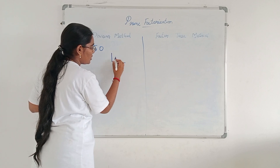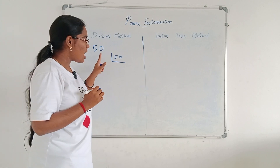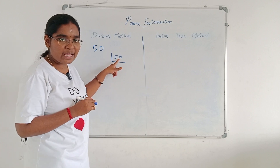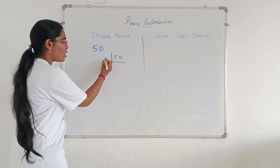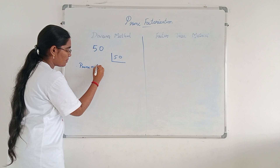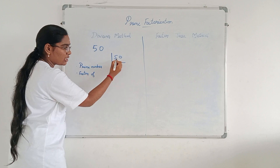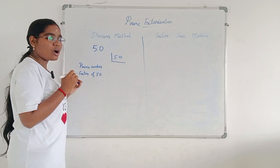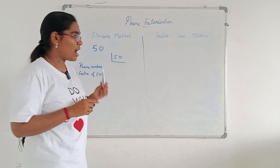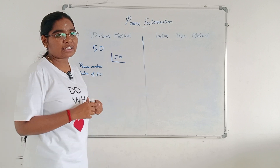First, you write 50. Here you should write a number that should be a factor of 50 and that number should be a prime number — rule number one: it should be a prime number and it should be a factor of that number, a factor of 50. You can choose 2 because 2 is a prime number and 2 divides 50 exactly, meaning 2 is a factor of 50.